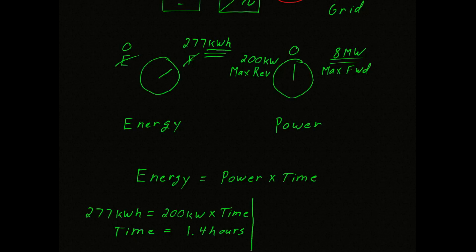We could also figure out how long it takes to discharge the battery. Let's assume the battery was completely charged when we started. So there would be 277 kWh. And the maximum discharge rate is 8 megawatts. When I said rate, that is how fast the energy is flowing out of the system.